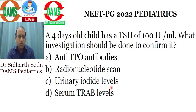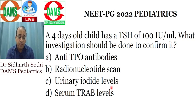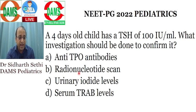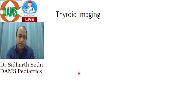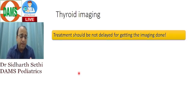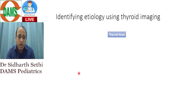There was a question on a four-day-old baby having a high TSH — what would you do to confirm it? The most common cause of congenital hypothyroidism is agenesis or dysgenesis of the thyroid gland. You would do a radionucleotide scan to look for whether it is an ectopic or absent thyroid. However, if the TSH is more than 40, you must start treatment with thyroxine immediately — do not wait for imaging.